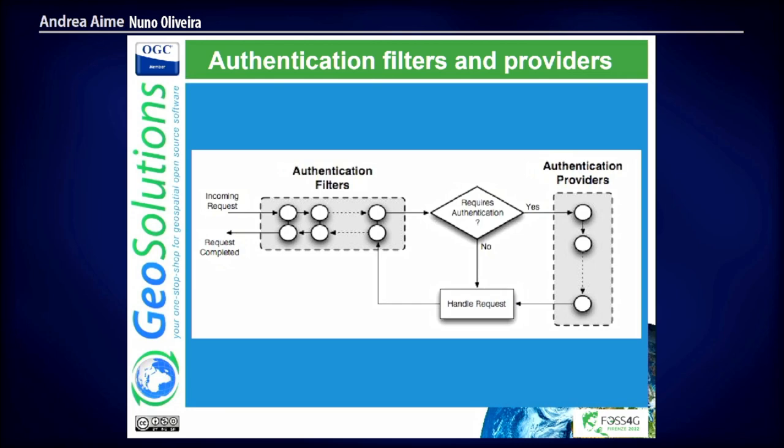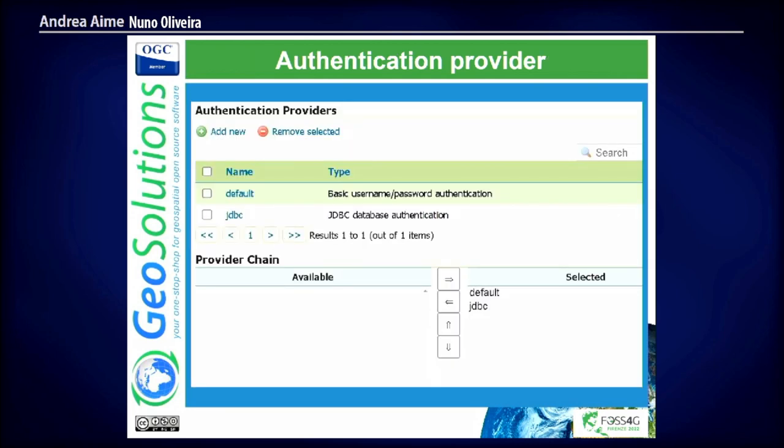What authentication providers do we have by default? The default one: you provide the user as an HTTP basic token and it will try to authenticate it. And a JDBC authentication — it will use your user and try to connect to the database; if it works, you are authenticated. This is very common in enterprise architectures that already have for Oracle, SQL Server, or PostgreSQL a very powerful authentication mechanism that they are just reusing.